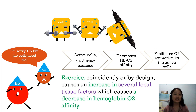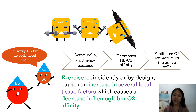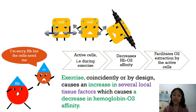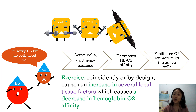When the cells are more active, for example during exercise, coincidentally or by design, an increase in several local tissue factors all have an effect in decreasing the hemoglobin oxygen affinity. The active cells can thus physiologically extract more oxygen from the hemoglobin in the capillary blood.